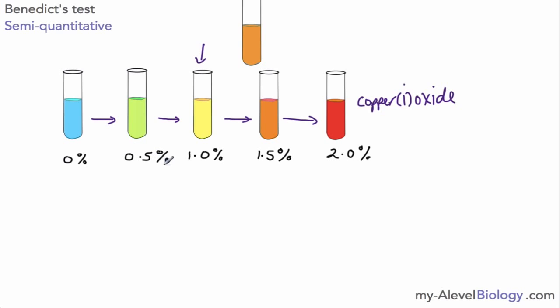So we've done the Benedict's test with a 0.5% solution of our reducing sugar, 1.0, 1.5, and 2, so we know the color that we're expecting. So with this one, then we can actually estimate that it's around about a 1.5% concentration of our reducing sugar. So in this way we say that the test is semi-quantitative.